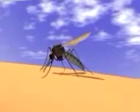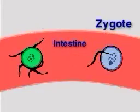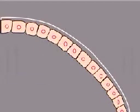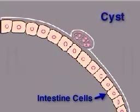A female mosquito sucks in plasmodia when she takes blood from a person infected with malaria. In her intestine, male and female forms of plasmodia combine into zygotes. Zygotes burrow into cells in her intestine and form tiny cysts.